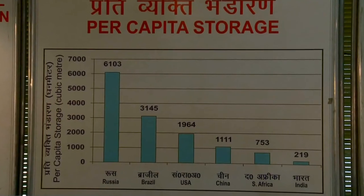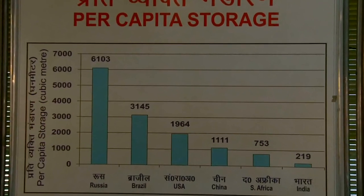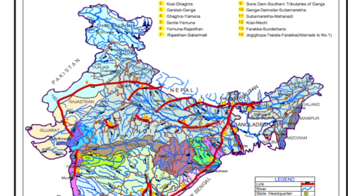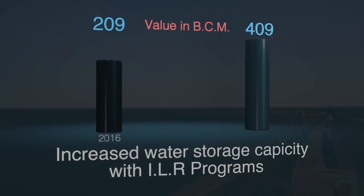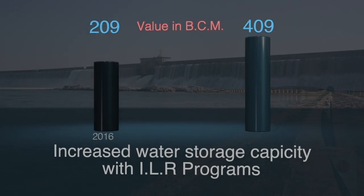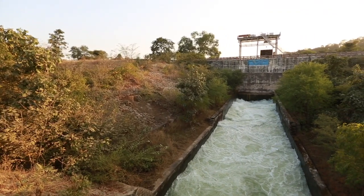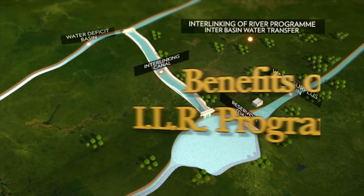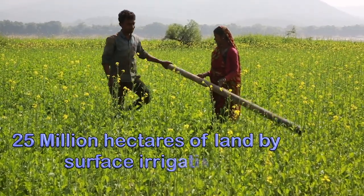India's per capita water storage capacity is far behind that of USA, Russia, Canada, China, and many other countries. Execution of all proposed water transfer links will enhance our storage capacity by 200 billion cubic meters and will transfer more than 170 BCM of surplus water to areas facing acute water scarcity.